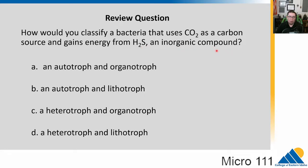Is it A, an autotroph and organotroph, B, an autotroph and lithotroph, C, a heterotroph and organotroph, or D, a heterotroph and a lithotroph? Think about what these mean. Pause the video. The answer would be B, an autotroph and lithotroph.